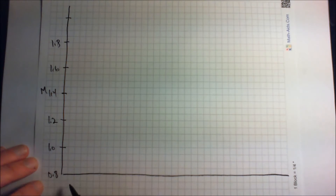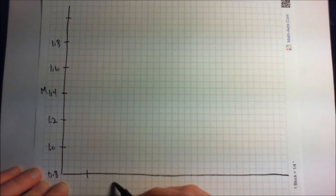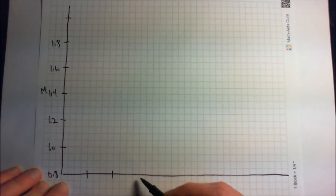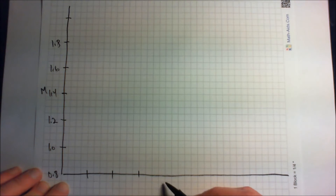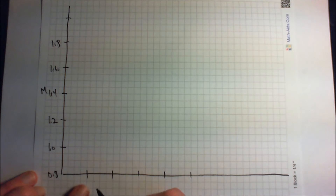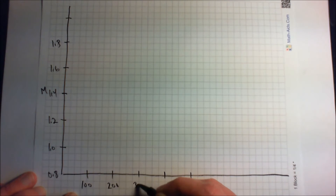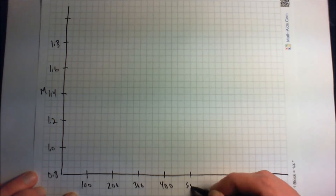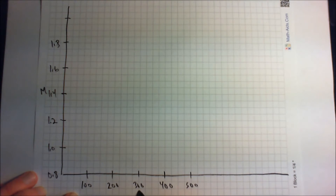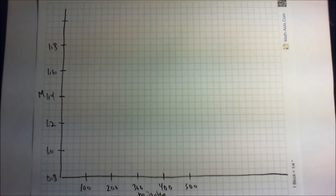We've got our y-axis in molarity, and we want our time across the bottom. Going by tick marks along the x-axis and labeling in hundreds — 100, 200, 300, 400, and 500 — in minutes. Okay, so I've got my axes set up for this graph.